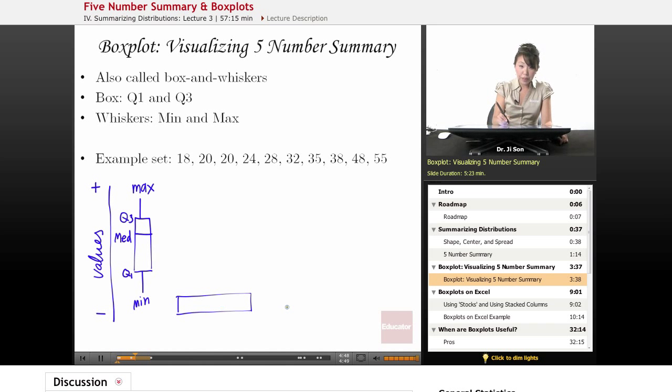Now it could also be on its side like this. In this case, the values would go like this, and once again you would have Q1, Q3, the median, the minimum, and the maximum. So it doesn't matter whether it's on this axis or this axis, but what you do have to know is the box should be in alignment with the values.